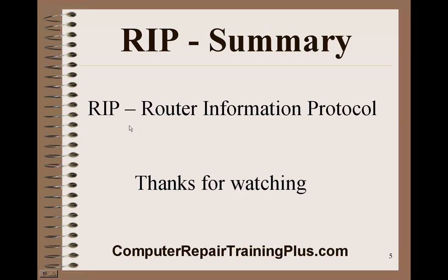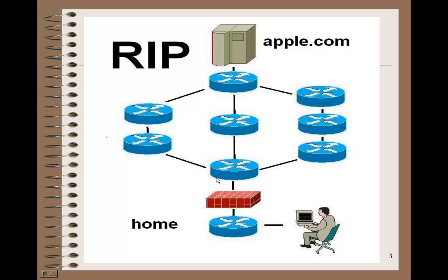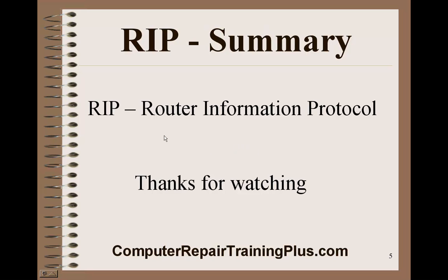In summary, RIP — Router Information Protocol — is an older protocol using hop count. It's not the most efficient today because some routers might have a lot of congestion, which can slow things down. So even though a path might look better because there are only three hops, if one of those routers got too congested, another route with more devices might actually be faster. RIP is the older protocol but maybe not the best one. Several newer protocols have come about to replace it, but you might see it on a test, so that's why we've covered it. Thanks for watching.